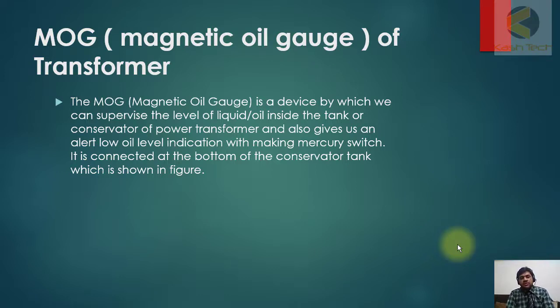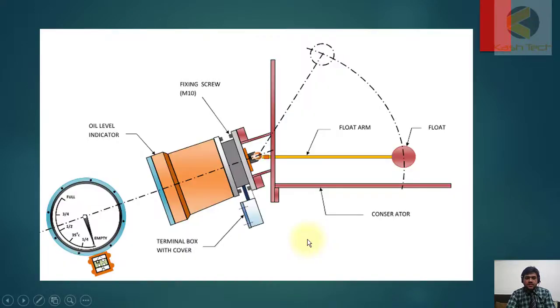This is an example. This is a float. So if the oil level is increasing, it will be moving up. If oil level is going down, it's moving down. This is here, it is shown as a conservator. This is a gauge. This is the side view of oil gauge.